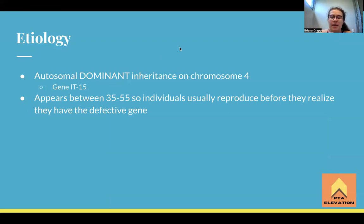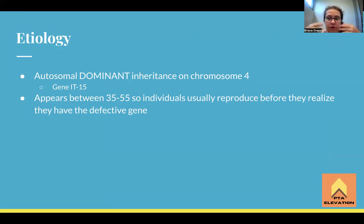With the etiology of Huntington's disease, it is an autosomal dominant inheritance found on chromosome 4 — a faulty gene on chromosome 4. The specific gene is the IT15 gene. This is passed down via autosomal dominance, which means you only need one copy of the gene to express the condition. If your dad had Huntington's disease and gave you the gene, it doesn't matter what your mom gave you — you will express the condition.